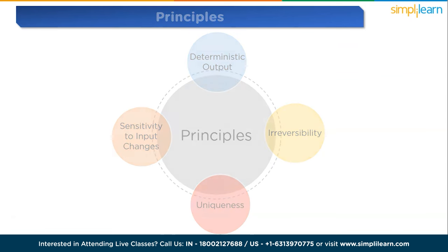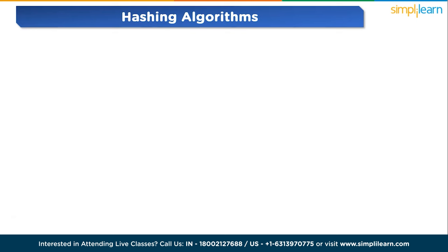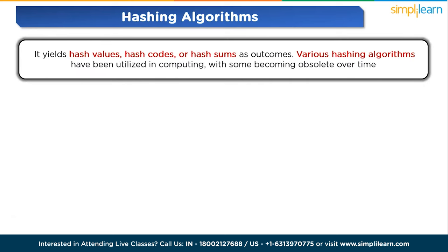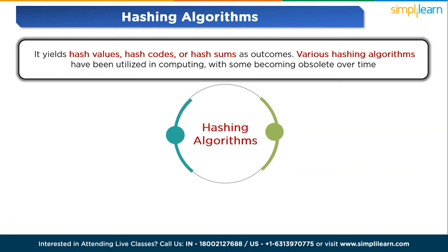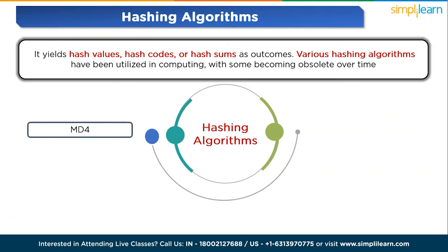A hash algorithm serves as the mechanism for hashing functions to transform data of varying sizes into fixed-size data. It yields hash values, hash codes or hash sums as output. Various hashing algorithms have been utilized in computing, with some becoming obsolete over time. Some examples are MD4, created by Ronald Rivest in 1990 — MD4 has a 128-bit length but faces security criticisms including concerns raised by its own creator. Then comes the SHA algorithm, developed by the National Security Agency, with a 160-bit length. Due to security vulnerabilities, organizations now prefer the more robust SHA-2 256-bit algorithm for cryptographic purposes.